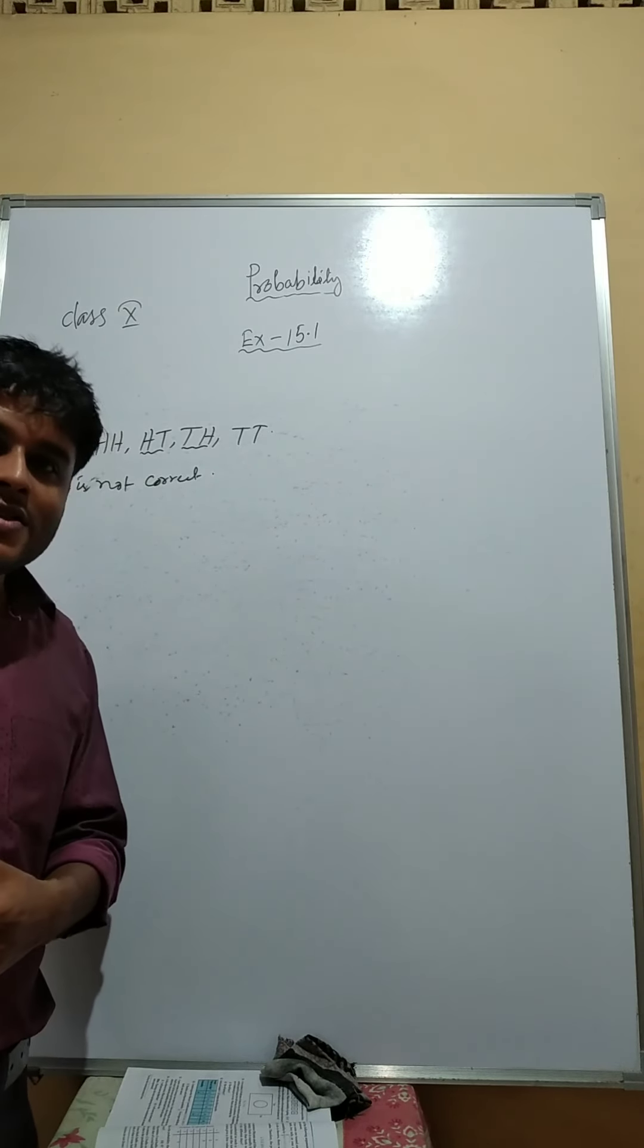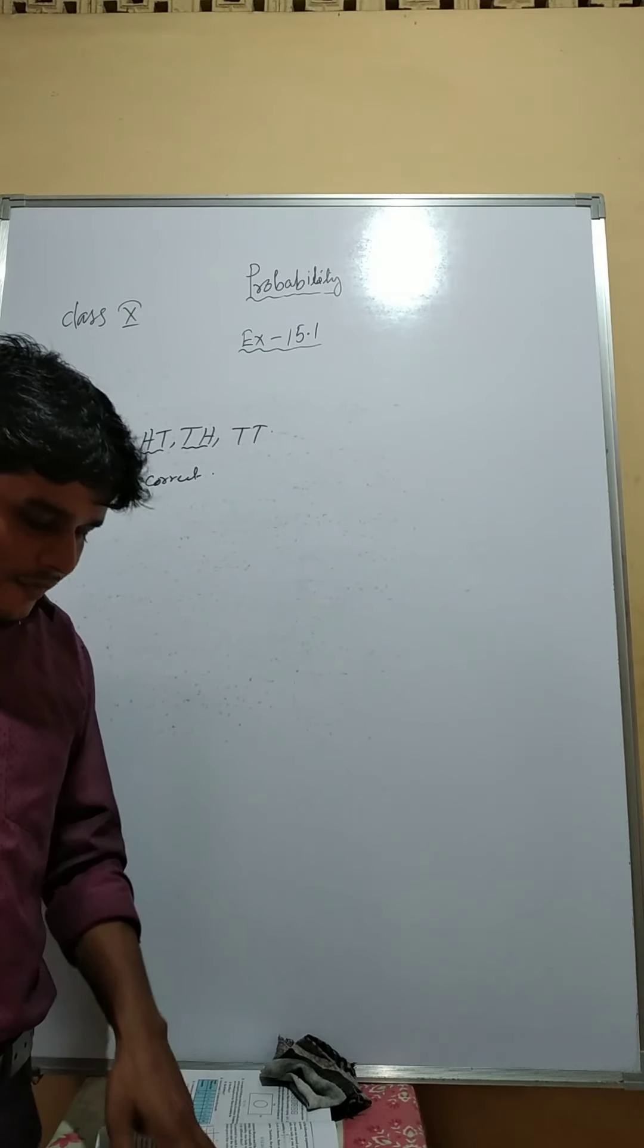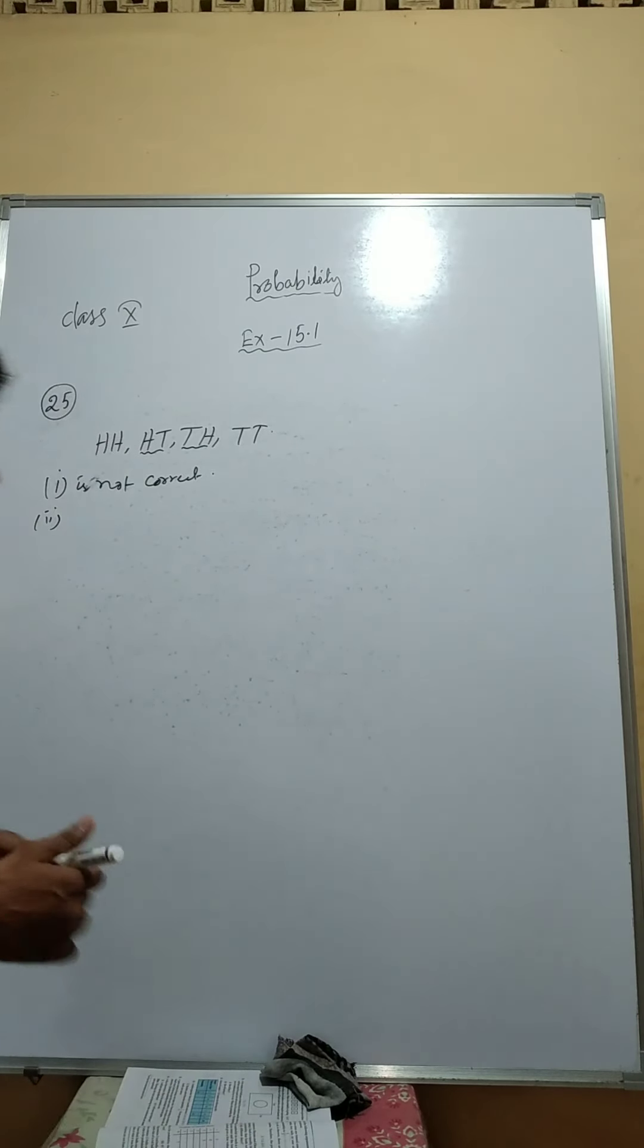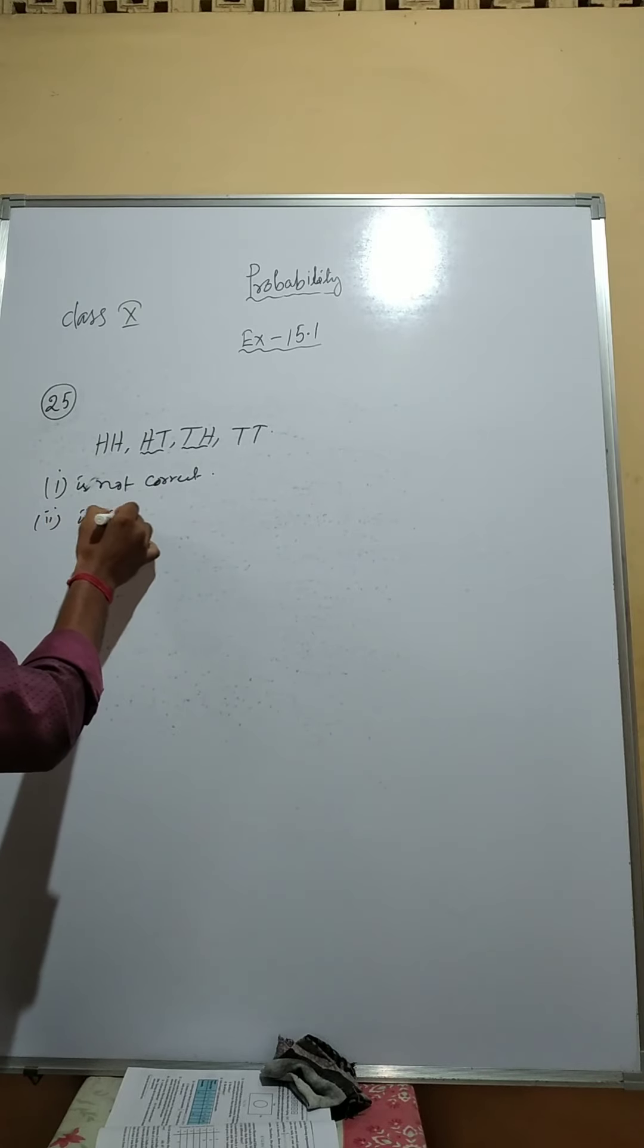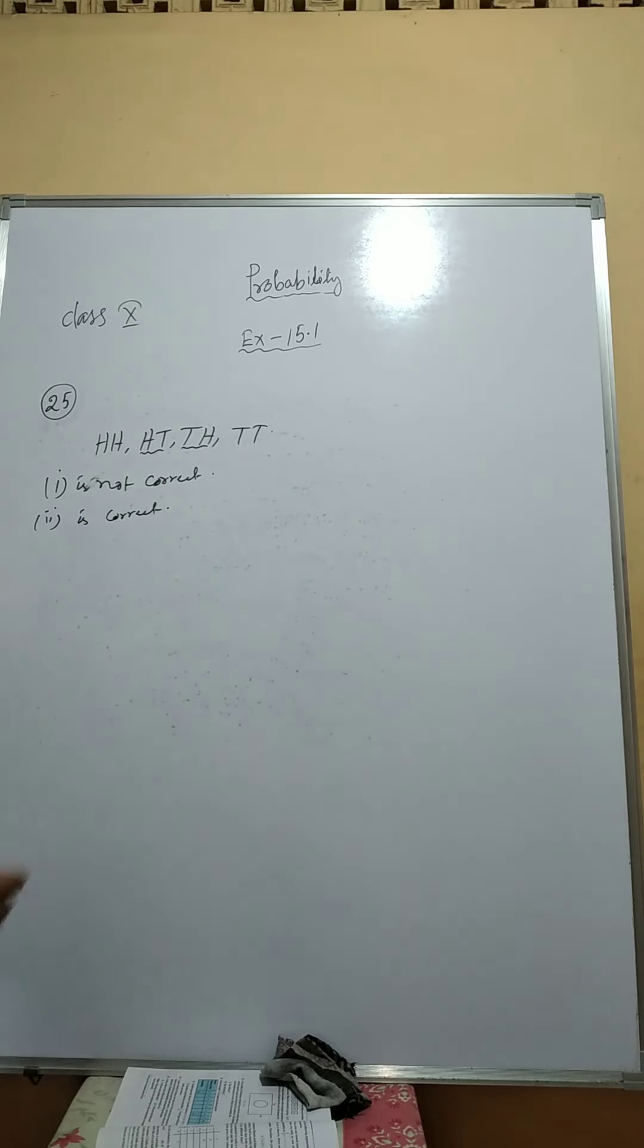Then the probability is 3 by 6, so half. Half is the probability. That means, Roman 2 is correct.